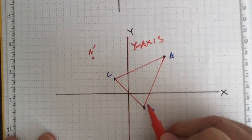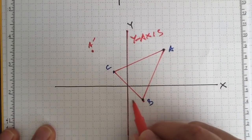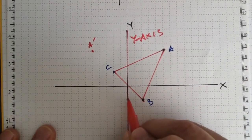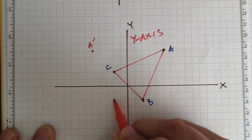All right, B, same thing, B is 2 spaces away from our mirror. So on the other side of the mirror, I'm going to put B prime.